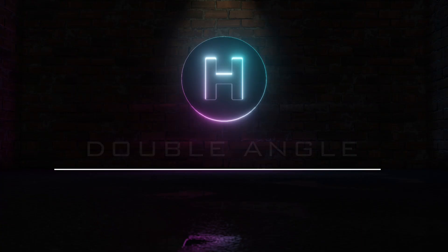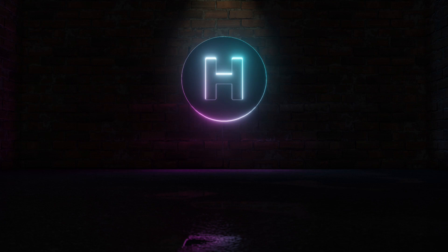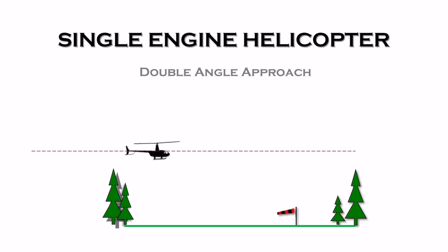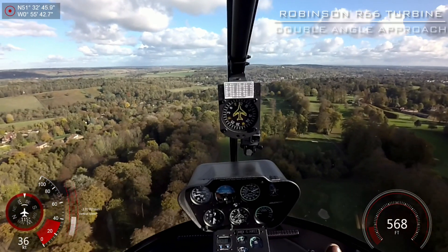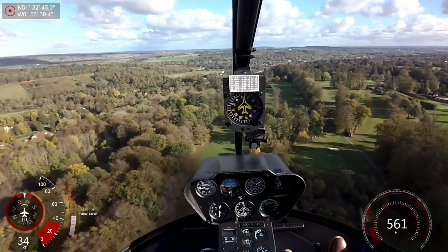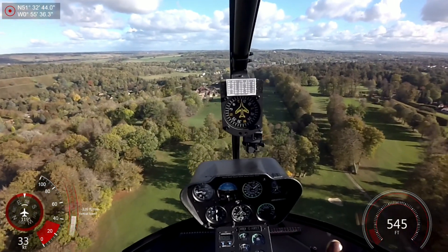We'll now have a look at landings into smaller confined areas. Different approach angle techniques can be used instead of the single angle approach described previously — you can use a double angle or a vertical descent. Using the double angle method you perform an approach to just above the height of the obstacle that obscures your landing area. Once you've safely cleared this, you can then adjust your descent to perform the final section of the landing at a steeper angle. This requires adjusting the collective lever to control the rate of descent whilst reducing the ground speed with aft cyclic input.